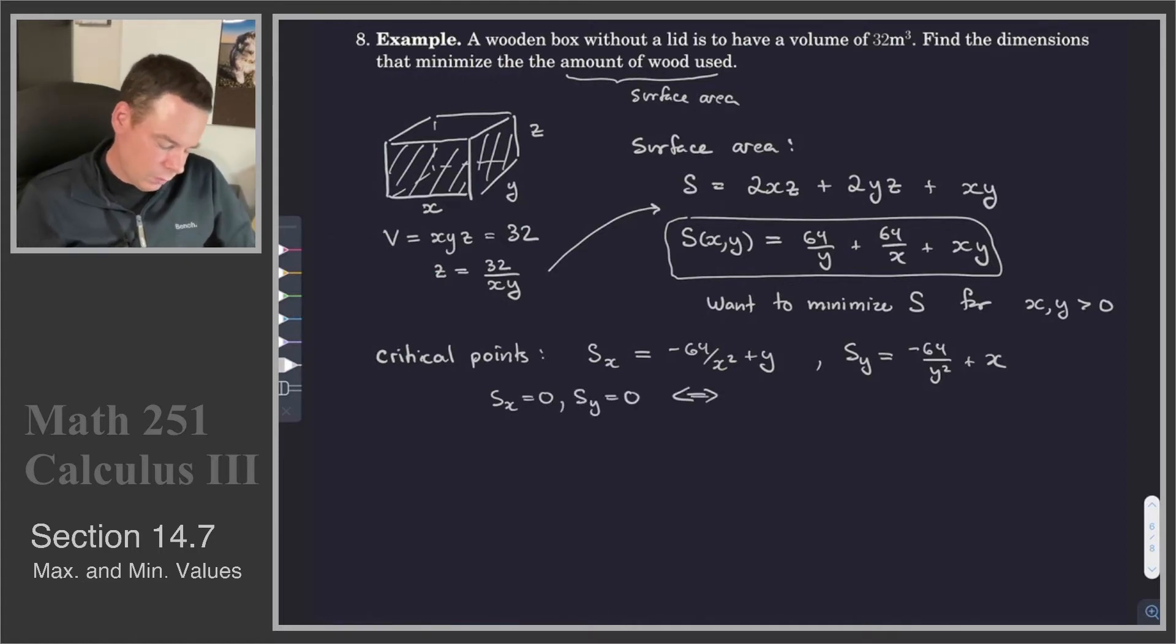Where's that going to happen? Well, if I look at the equation for the x partial, negative 64 over x squared plus y, if that's going to be zero, then that means that x squared y has to be 64. Similarly, Sy equals zero means that xy squared has to be 64. So those are the two equations that I need x, y to satisfy in order to be a critical point.